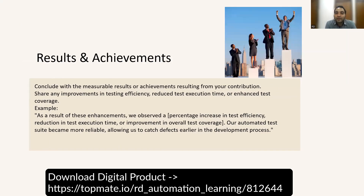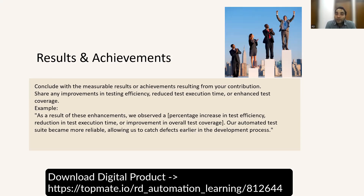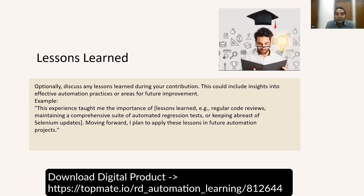Results and achievements are very important. You have to quantify your results — use percentages and numbers. For example: 'We observed a percentage increase in test efficiency,' 'reduction in test execution time,' or 'improvement in overall test coverage — for instance from 15% to 26%.' Automated tests became more reliable, helping catch defects and enabling release testing during holidays, such as Christmas, when the team was on leave.